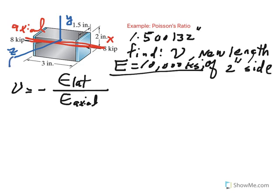Z is lateral, as well as y. Y is also lateral. X is axial, y and z are lateral.